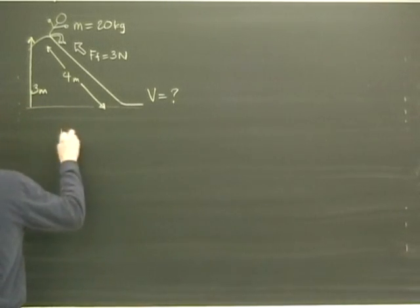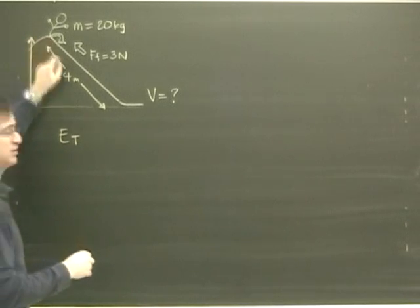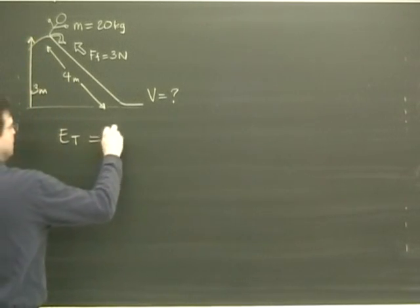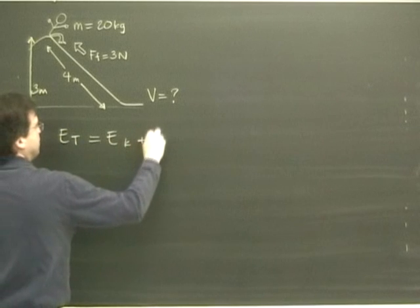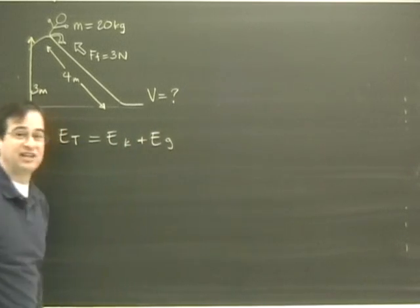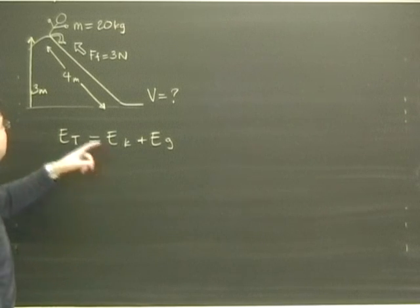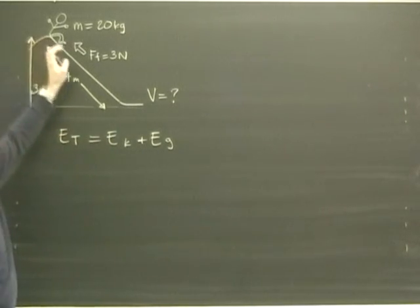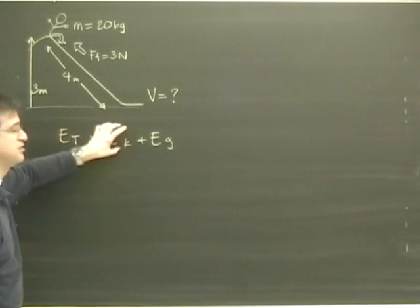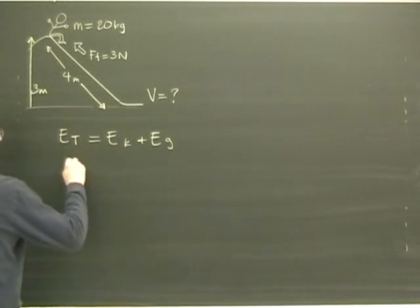So we're going to find the total energy here for the person at the top of the slide. Well, I'm dealing with kinetic energy and I'm dealing with gravitational energy, so I have to account for both of those in my equation. And we're kind of lucky. At the top here, the person is starting at zero velocity, so this is going to end up being zero anyways.